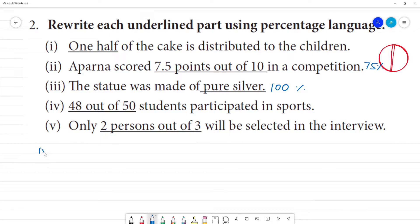Next is the fourth one. 48 out of 50, that is 48 students out of 50 students participated in sports. Multiply by 100. 48 by 50 is a fraction. This is 1 times, this is 2 times. 8 times 2 is 16, remainder gives 96. So 96% of students participated in the sports.